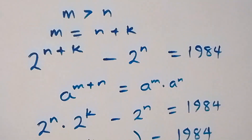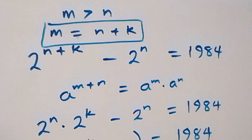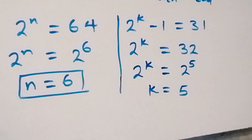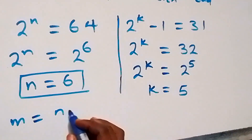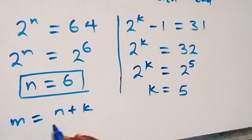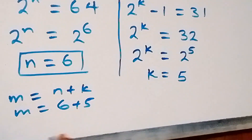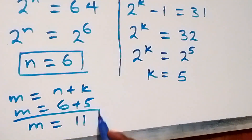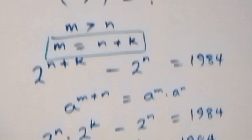Since m equals n plus k, where n is 6 and k is 5, we have m equals 6 plus 5, which implies m equals 11.